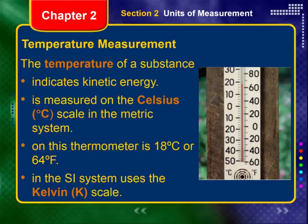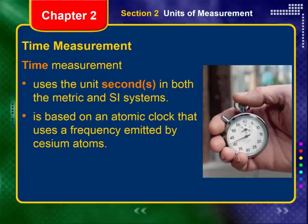Temperature of a substance indicates kinetic energy — the energy of movement. It's measured using the Celsius scale in metric systems. On the thermometer shown, we have a temperature of 18 degrees Celsius. The SI system uses Kelvins, and we'll use that when we start talking about gases and the kinetic molecular theory.